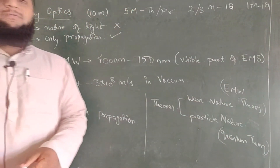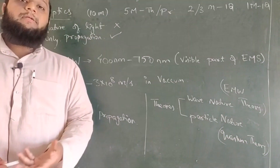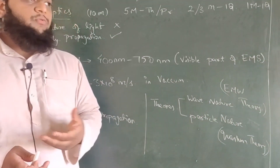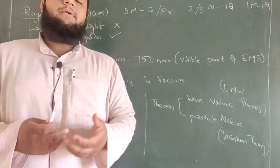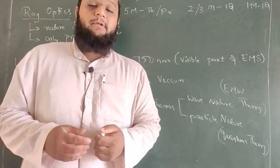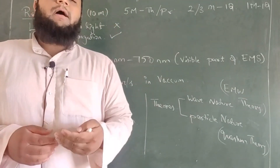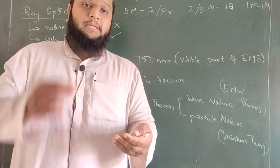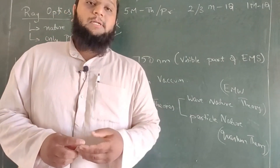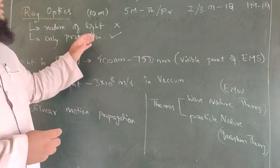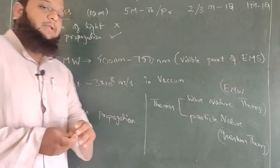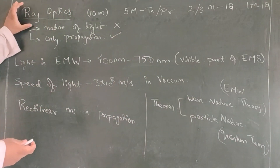Coming to Ray Optics, what are we going to learn in this particular chapter? Here you are going to learn about how light moves, what the different types of optical instruments are — for example, the mirror that we use in our day to day life, then the lenses used in optics, and then you will be learning about telescopes. So how does the light propagate and what is its behaviour? That is what we are going to learn in Ray Optics.